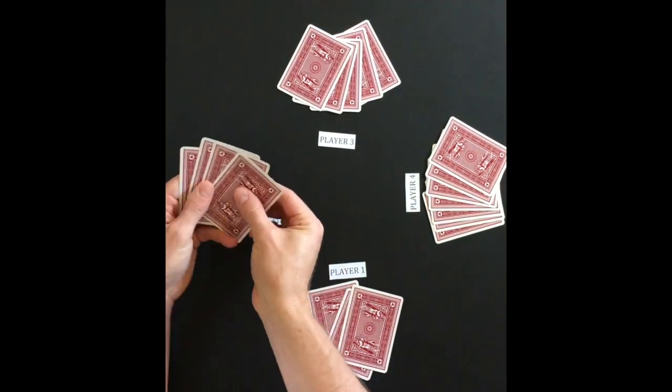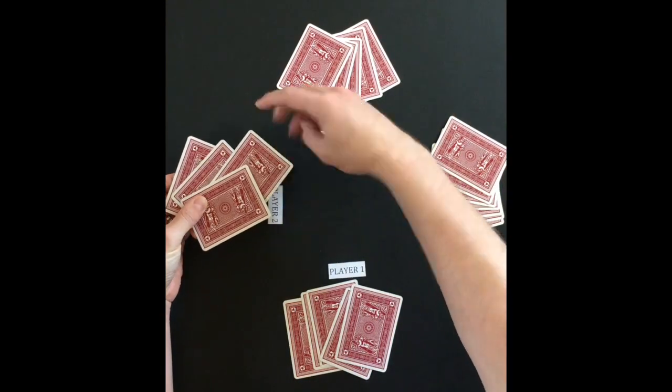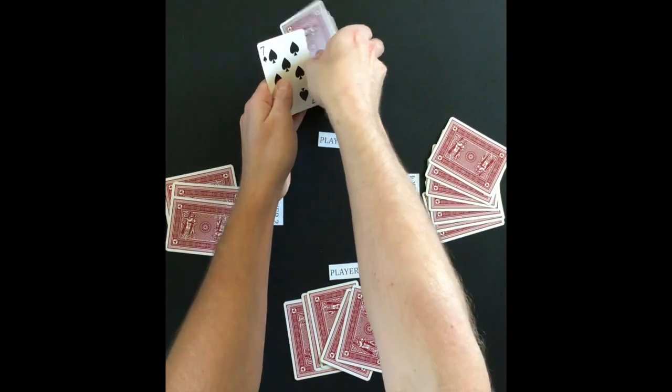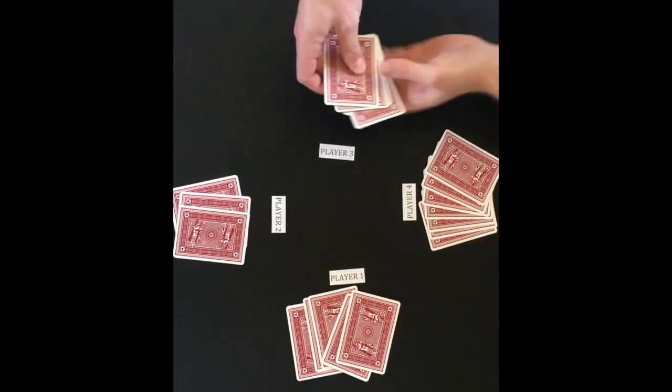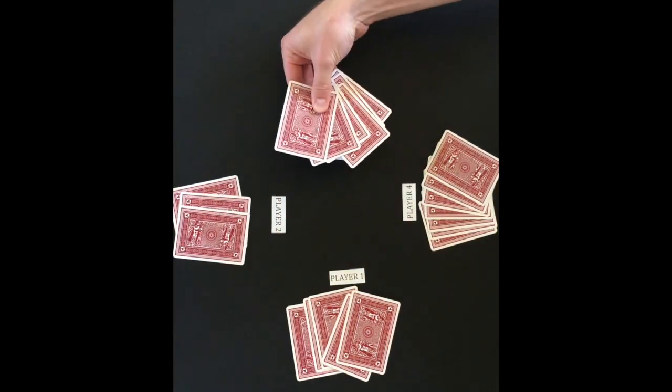Play moves clockwise to player 3 who draws a card from player 2's hand. If the card drawn does not create a pair, the card stays in player 3's hand. Play continues clockwise with players drawing from the player behind them.